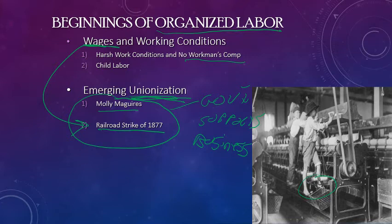Early unionization is fraught with problems because it's not well run. It's centered around violent acts and violent groups, and it's going to be a really hard situation for the unions to shake. Sometimes, as in the case of the Molly Maguires and the railroad strike, some of these groups can be violent and socialistic. Unions that really want to accomplish good are bogged down by that reputation. That kind of answers the question of why there's no public support.